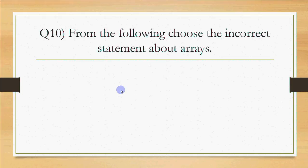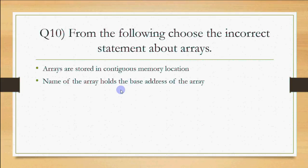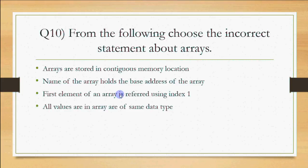Question 10: From the following, choose the incorrect statement about arrays. First: arrays are stored in contiguous memory location - true. Name of the array holds the base address - also true. All values in array are of same type - also true. But first element of an array is at index 0, not index 1. So the incorrect statement is the third statement: first element of an array is referred using index 1. No, it's referred by index 0.